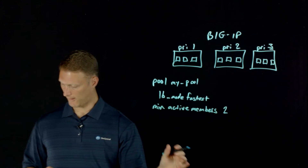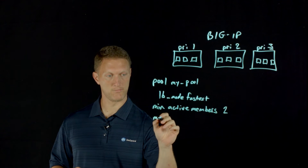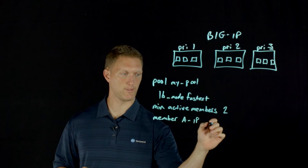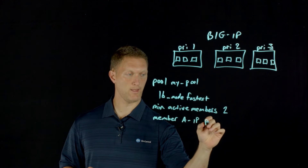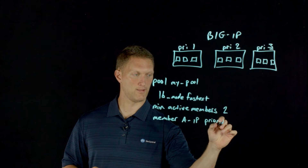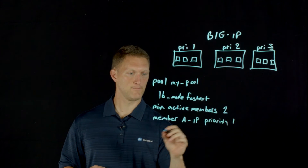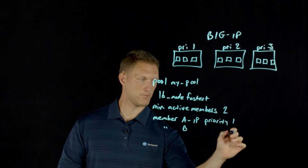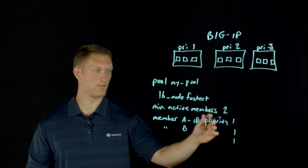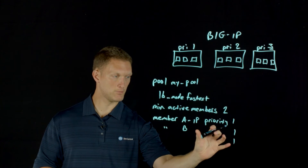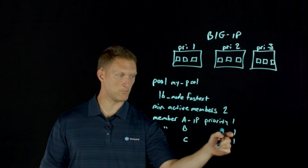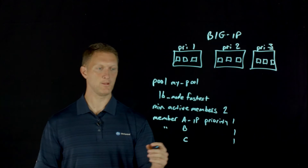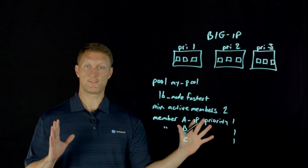Right after this they define all the pools. You have pool member A with its IP address, and its priority is one. Similarly pool member B with priority one. They defined three pool members in priority one, three more in priority two, and three more in priority three. So the question is: who gets the traffic, and more specifically, if one of these goes down, then who gets the traffic?